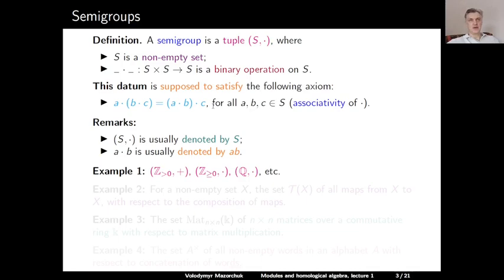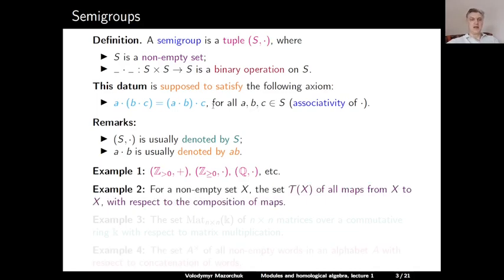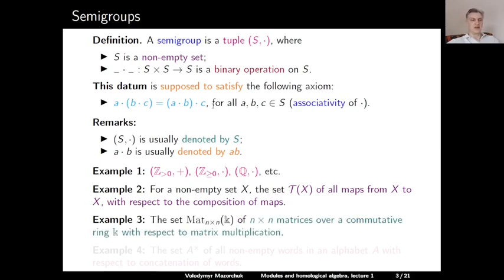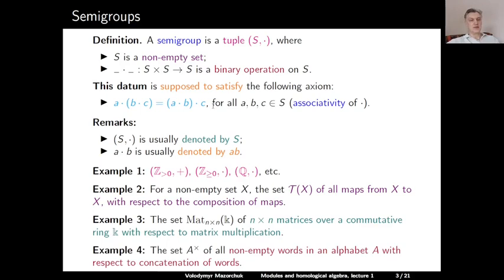There are many natural numerical semigroups consisting of some kind of numbers with respect to the usual arithmetic operations of addition or multiplication. Example two: for a non-empty set X, consider the set T(X) of all maps from X to X. This is a semigroup with respect to the composition of maps, because the composition of maps is associative. Example three: the set of all n×n matrices over a commutative ring K is a semigroup with respect to matrix multiplication — and also with respect to matrix addition, but the multiplication structure is more interesting and non-trivial.